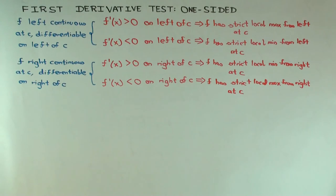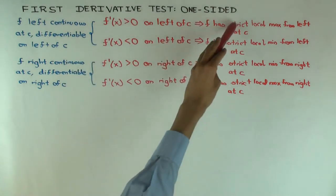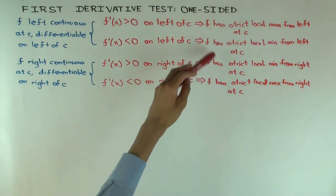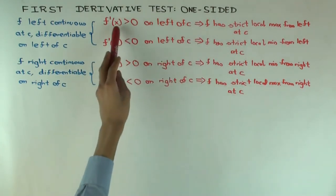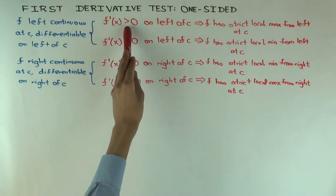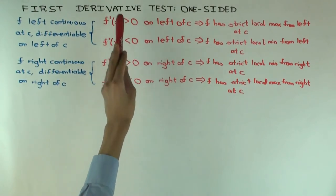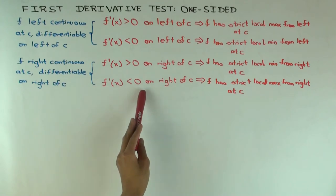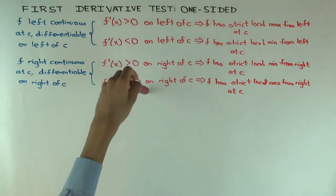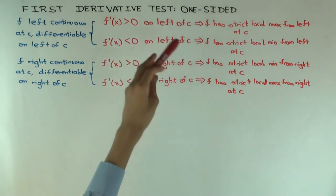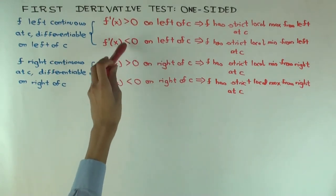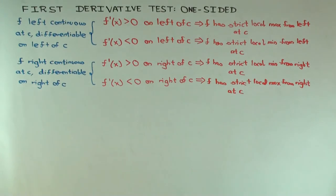A couple of quick remarks. Notice that the sign condition for a maximum is different on the left versus the right. For a max from the left, the derivative has to be greater than 0 on the left. For a max from the right, the derivative has to be less than 0 on the right. So the sign condition is opposite for max, and similarly for min the sign conditions on the left and right are opposite. That's going to be important when we do the combined two-sided version.